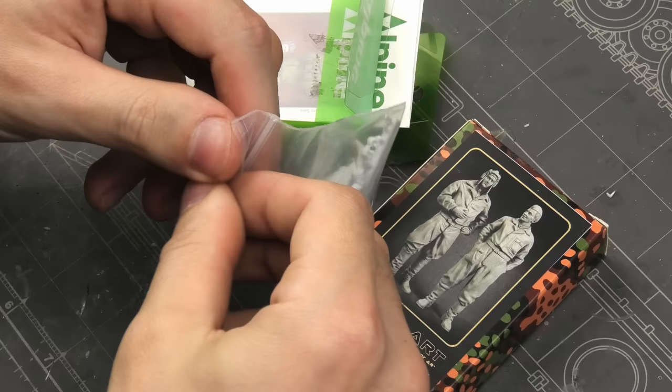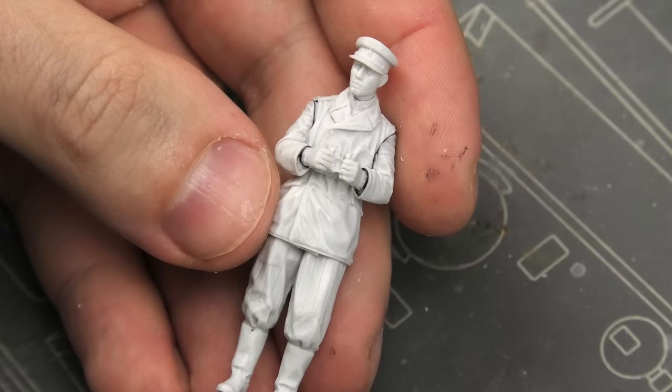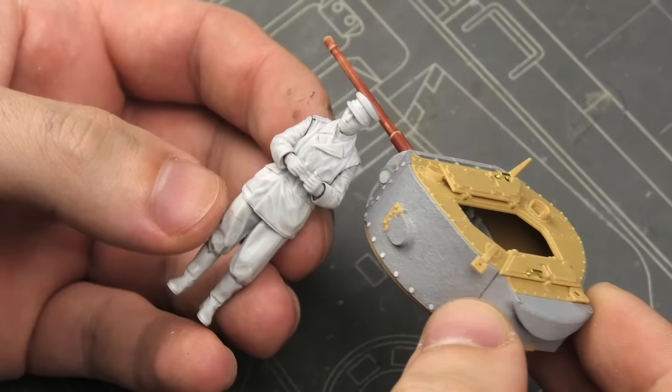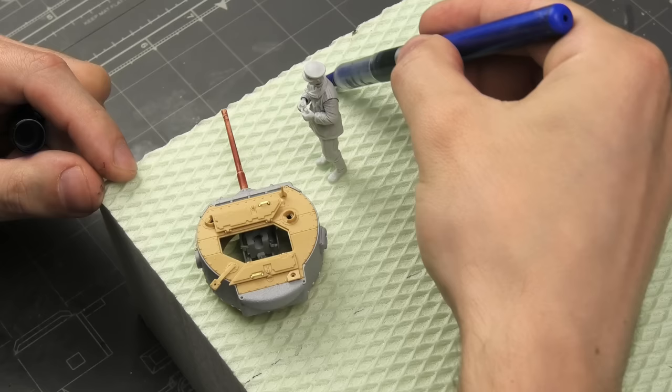Figures also play a very important role in this scene. My initial plan was to use two Soviet tankers, but the size difference between the Alpine and Panzer Art figures was very noticeable. So ultimately, I decided to just go with the Alpine tank commander.